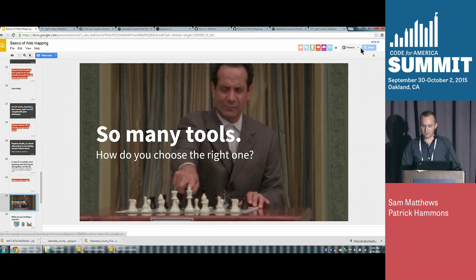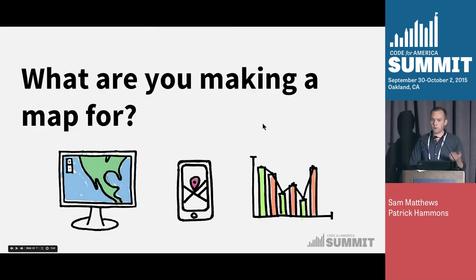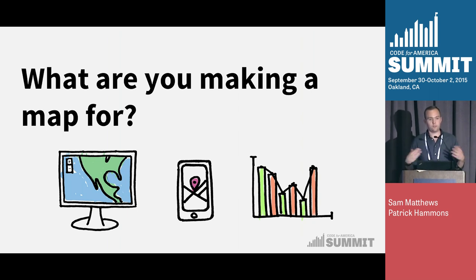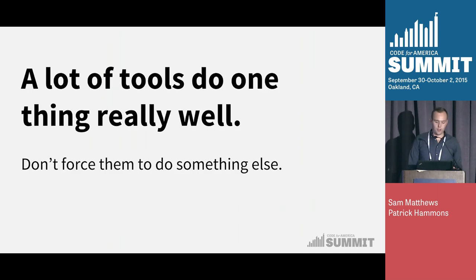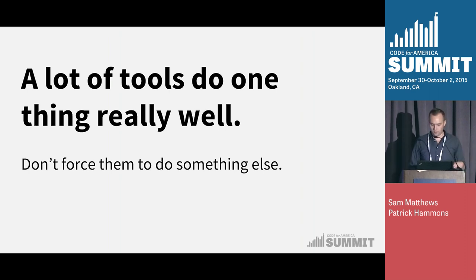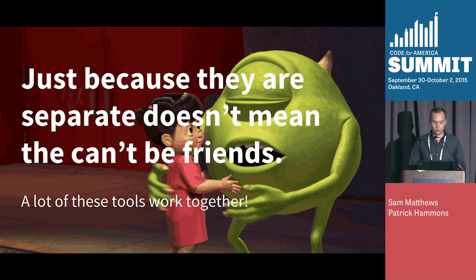So many tools — there are so many ways to map things now. How do you choose the right one? First, what are you making a map for? Are you exploring data, presenting data, building something interactive for a website, or building a base map for an application? Just picking and choosing is important. The main thing is don't force tools to do something they weren't meant for. At this point in mapping, there's no reason to use just one tool — you can use a bunch of different ones together.